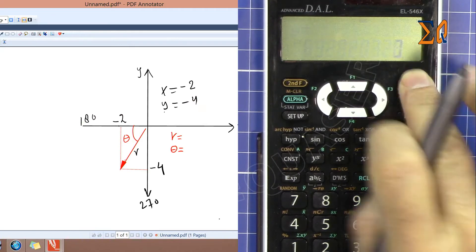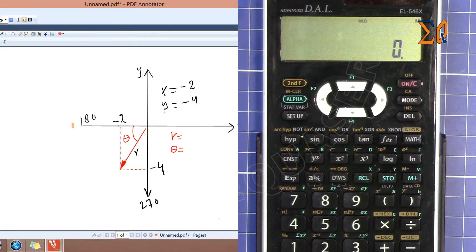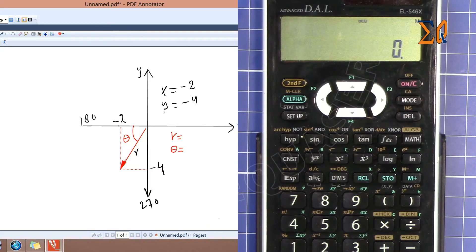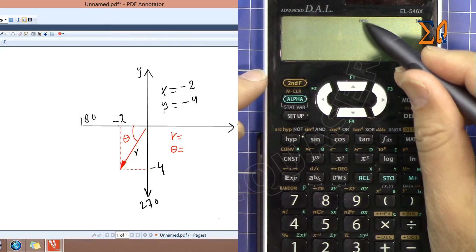In this example, as you can see on the screen, we are now converting—we have X as minus 2 and Y as minus 4. We want to find R and we want to find this theta, this angle between 180 and 270 degrees. To convert it, we must be in degree, always remember.